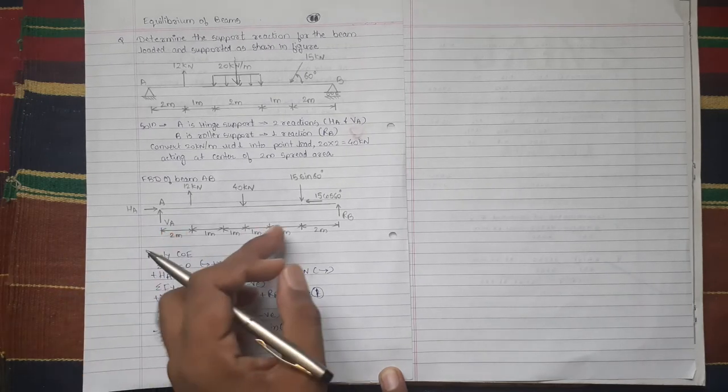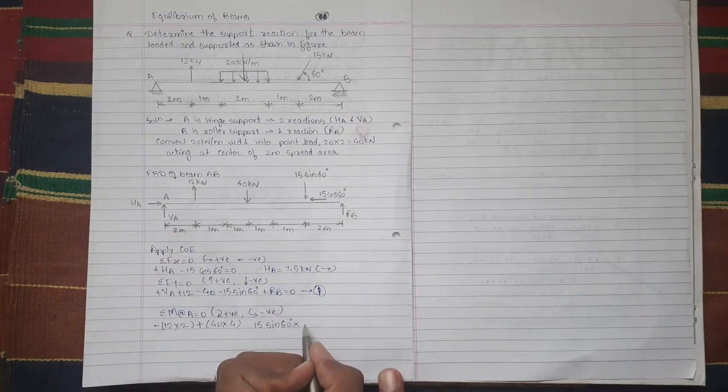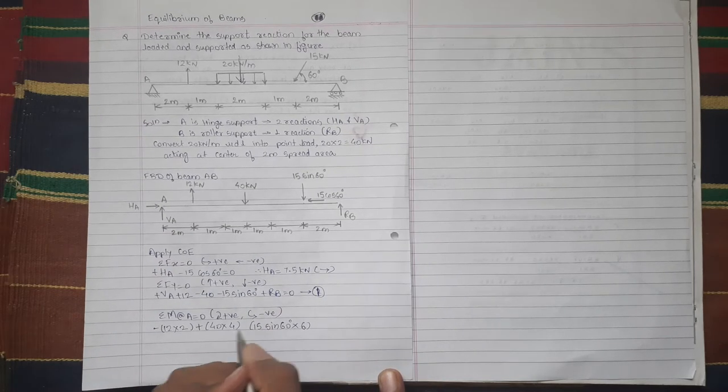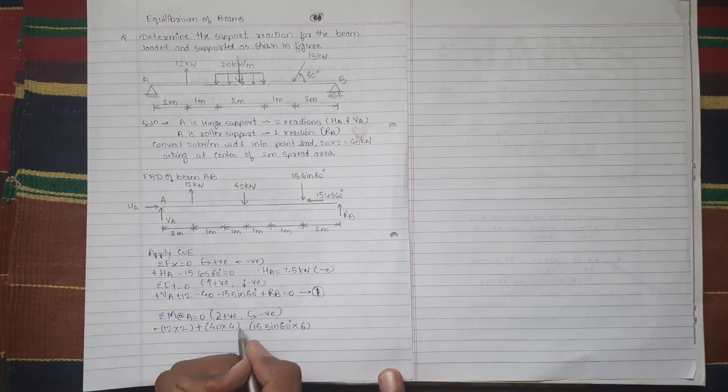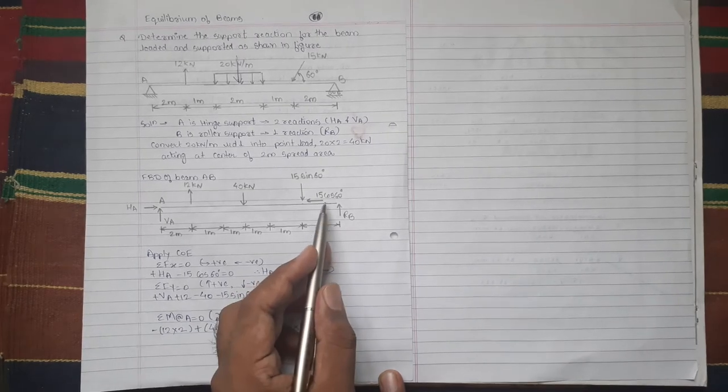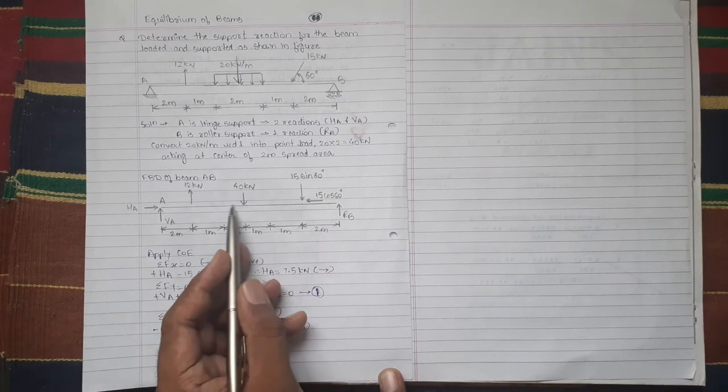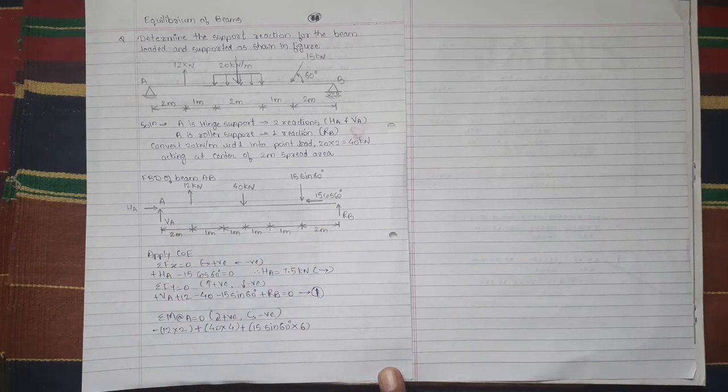It is acting at a distance of 6 meters and it is going to create clockwise moment about point A. 15 cos 60, its line of action passes through A, so its moment is not taken.